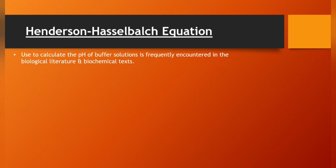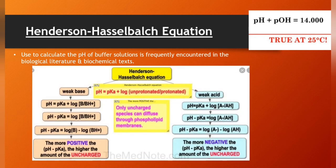Henderson-Hasselbalch equation is used to calculate the pH of buffer solutions, frequently encountered in the biological literature and biochemical texts. Henderson-Hasselbalch equation is pH equals pKa plus log unprotonated divided by protonated. Only uncharged species can diffuse through phospholipid membranes.